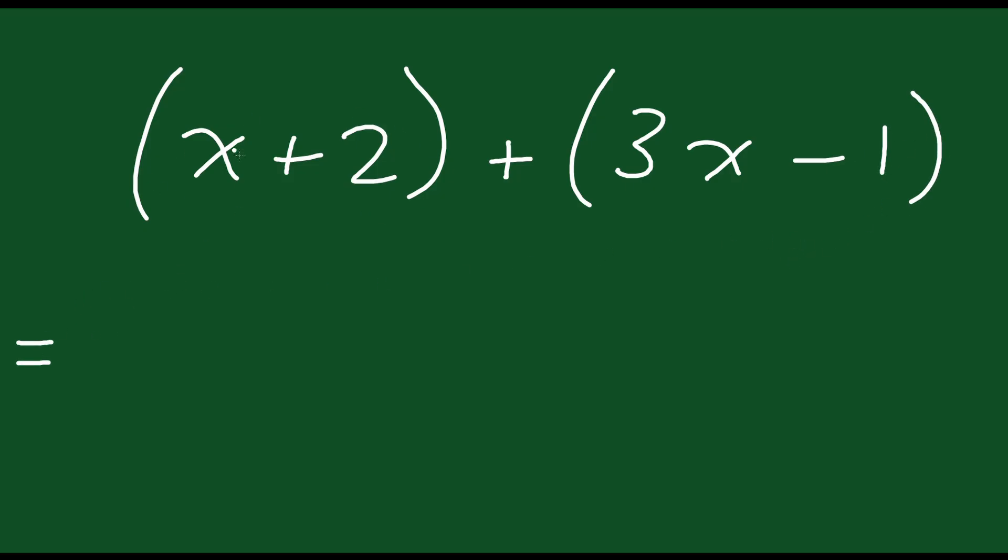Well if you look at this first one here x plus 2 these brackets aren't really doing anything. There's no number here on the outside that we have to distribute in. There's nothing really fancy going on. I don't really need those brackets so I can just write that first binomial as x plus 2. The second binomial here I'm just adding 3x and the minus 1. So I can just put plus 3x minus 1. If you want to think of it like you're distributing in a positive 1 into here you can think of it like that but really there's nothing going on that's fancy. You can just get rid of the brackets in this example.